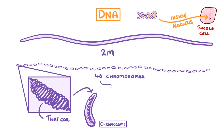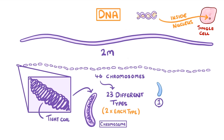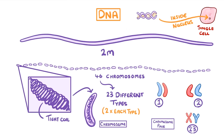So we can say that each of our cells has 46 chromosomes in it. However there are only really 23 different types because we have two of each type, one from each of our parents. So we'd have two chromosome ones, one from our father and one from our mother, two chromosome 2s and so on, all the way to 23. And we call each of these a pair.